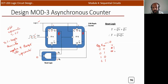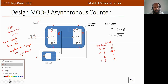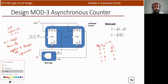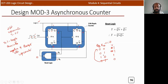When state 11 occurs, the NAND gate output Y goes to 0, activating the clear input of the flip-flops (active low). This immediately resets both outputs to 00. The state 11 is transient and not visible in the waveform. The counter then continues: 01, 10, reset to 00, and so on.